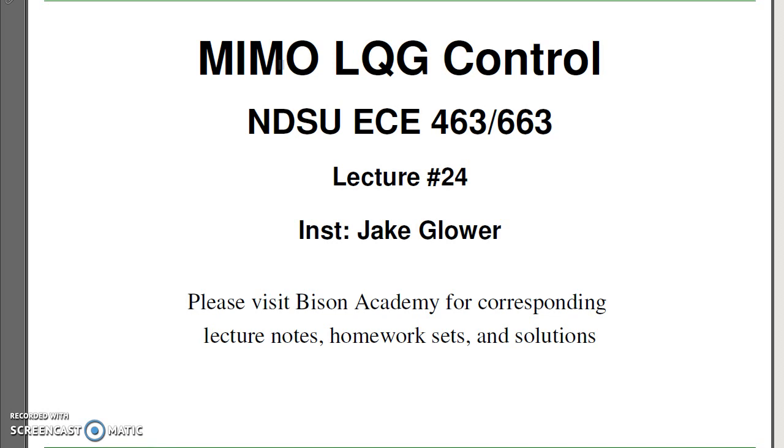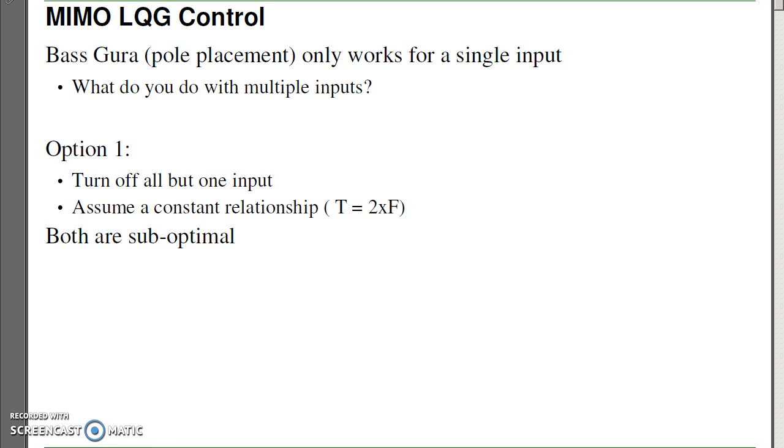In lecture 24, we're looking at LQG control for systems with multiple inputs and multiple outputs. We looked at initially in this semester Bas-Gura or pole placement. Problem with pole placement is it only works if you have a single input. Question that arises then, what happens if I have multiple inputs?